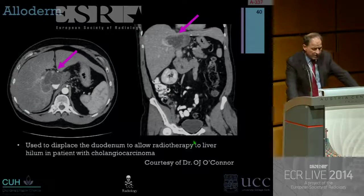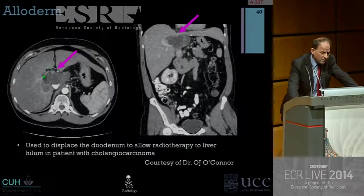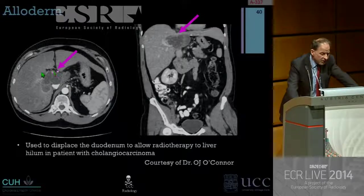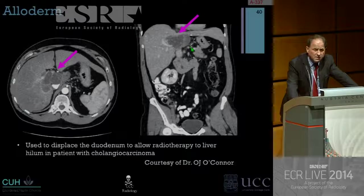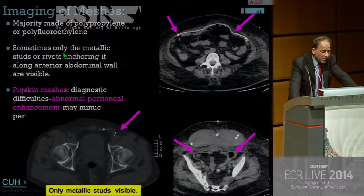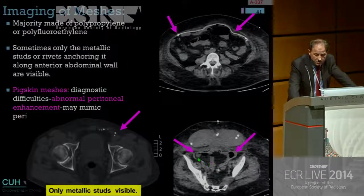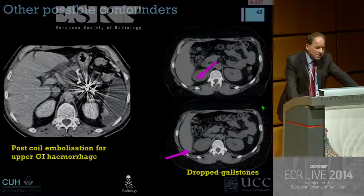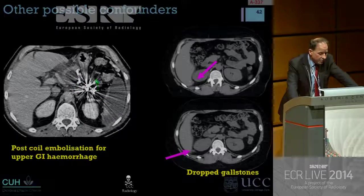A case from Dr. Rowan O'Connor in Cork demonstrates a new material used by radiotherapists called alloderm, which is placed to displace structures during radiotherapy. In a patient with cholangiocarcinoma, alloderm was placed to displace the duodenum — if unaware, you could easily mistake it for recurrent tumor. Regarding mesh imaging: most meshes are polypropylene or polytetrafluoroethylene — sometimes only the metallic studs are visible, sometimes the whole mesh. One patient developed a hematoma following the procedure. Finally, interventional radiologists can leave coils behind for bleeding, and dropped gallstones can mimic peritoneal carcinomatosis.